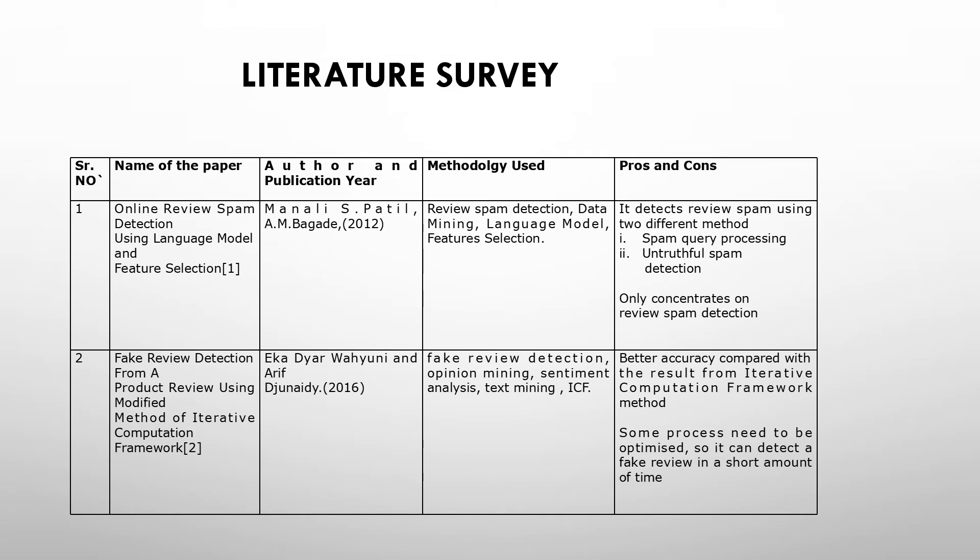Literature Survey. Our first paper is 'Online Review Spam Detection Using Language Model and Feature Selection.' The methodology used is review spam detection, data mining, language model, and feature selection. The pros and cons are: it detects review spam using two different methods — first is spam query processing, and second is untruthful spam detection.